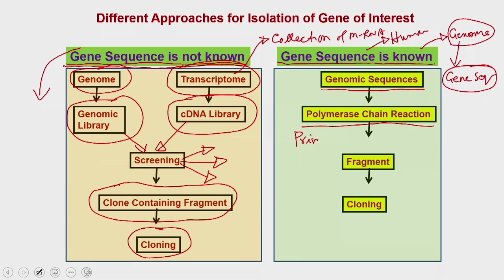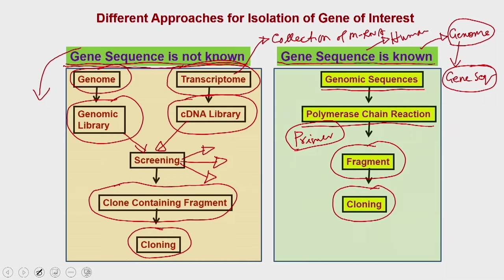In the other scenario, when the gene sequence is available, you take the genomic sequence information and perform a polymerase chain reaction using site-specific forward and reverse primers along with the reaction mixture and enzymes used in PCR. You get a PCR product which you then insert into a cloning vector or overexpression vector for downstream applications.